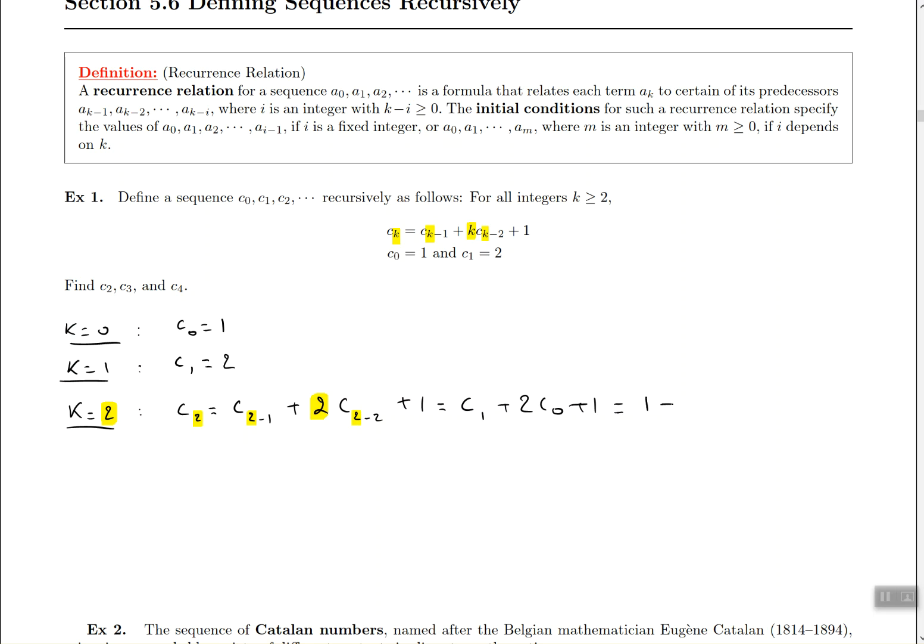C1 is 2, and C0 is 1, and we have to add the extra 1 at the end. So this is going to be a total of 2 plus 2 plus 1, which is 4 plus 1, which is at the end just going to be simply 5.